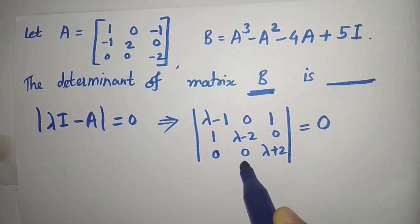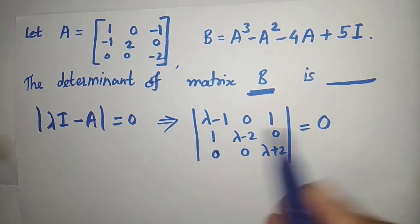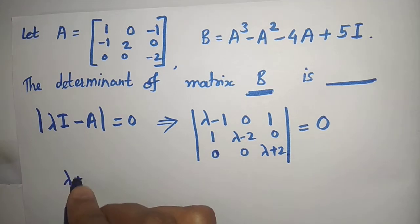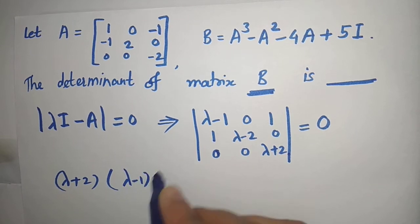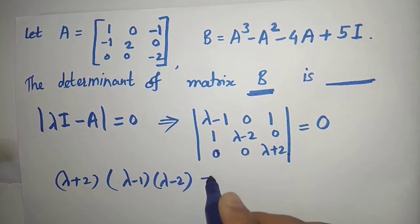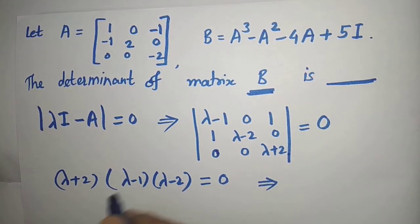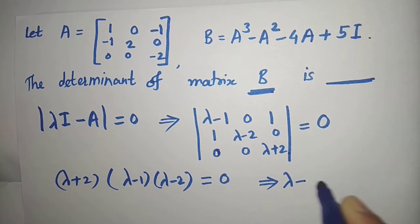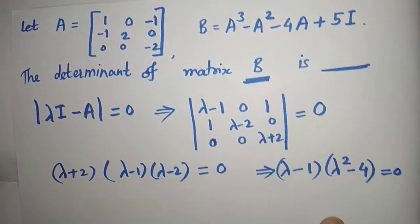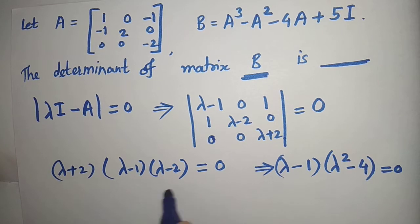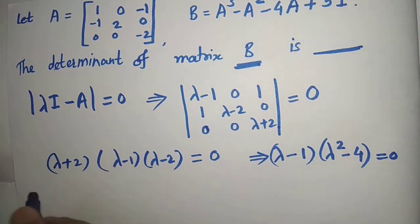Since two entries in the last row are zero, we expand the determinant from that side. The determinant is (λ+2) times the determinant of the upper-left 2×2 block, which is (λ-1)(λ-2), set equal to zero. This gives us (λ-1)(λ² - 4) = 0, using the identity (a-b)(a+b) = a² - b².